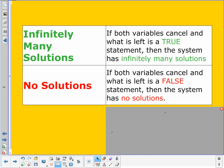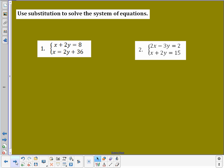Now let's take a look at putting one of these into practice. If I look at number 1, I want to start by looking at the system and seeing if there is a variable that's already alone. When I look at those two equations, the top equation x + 2y = 8, the bottom equation x = 2y + 36. This x right here is already by itself. So, our step one is done. Once you have a variable that's alone, you already are ready to move on to step two.